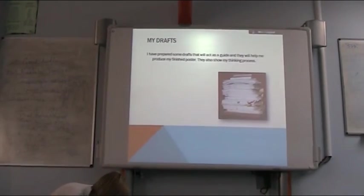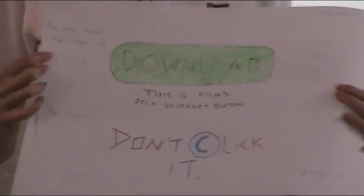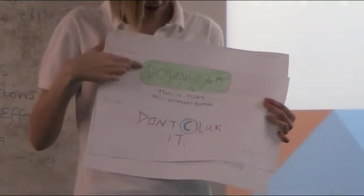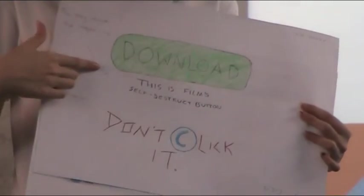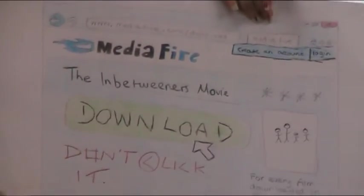I have my first draft here which is just the slogan and the download button which is the self-destruct button, which then developed into being on a computer screen with 'don't click it' on a keyboard. The third one I started to think about putting it onto actual keys on the keyboard. And then the fourth one I was thinking about maybe putting it into a webpage on the computer instead.